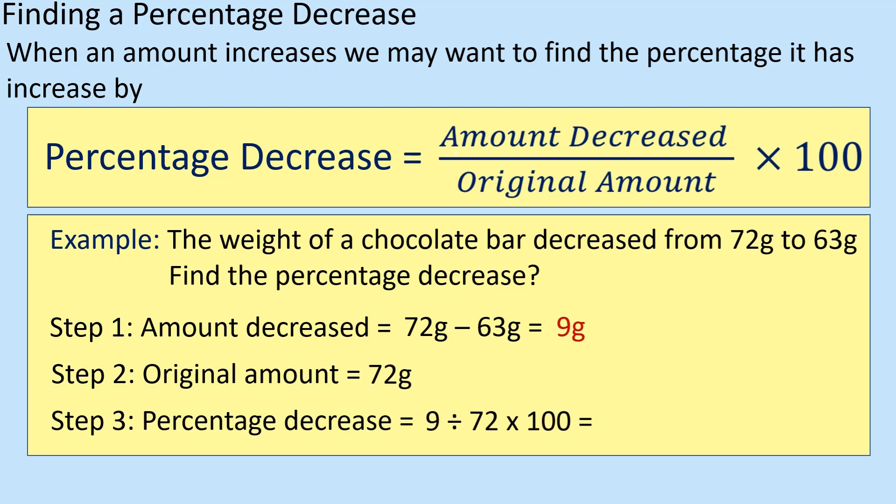Alright, so 9 divided by 72, times by 100, which is 12.5%. Okay.